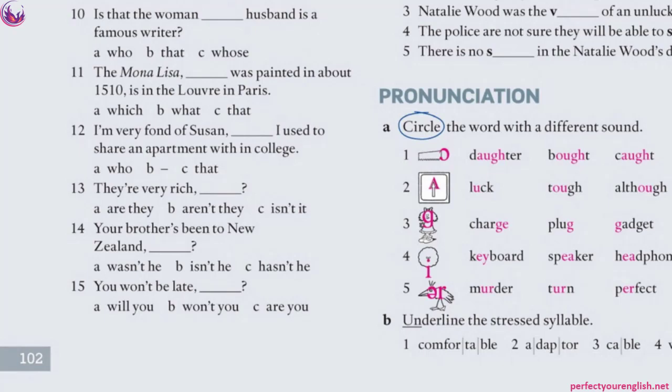Number 12: 'I'm very fond of Susan, who I used to share an apartment with in college.' Again a non-defining relative clause — between a comma and a period. B is wrong — in non-defining relative clauses we cannot omit the relative pronoun. 'That' is also wrong because we don't use 'that' in non-defining relative clauses.